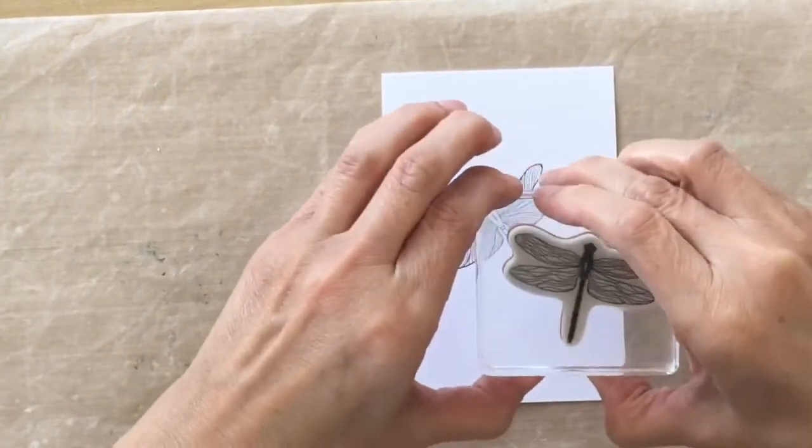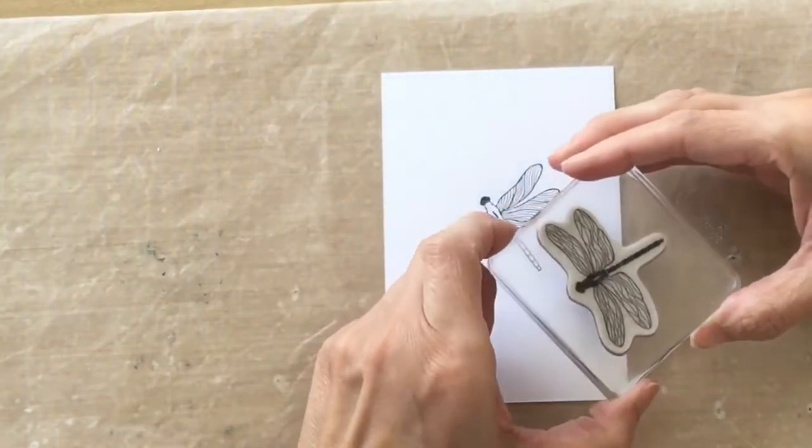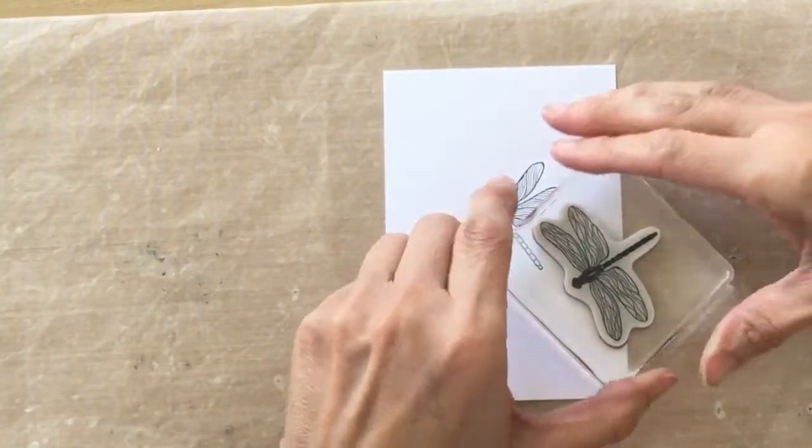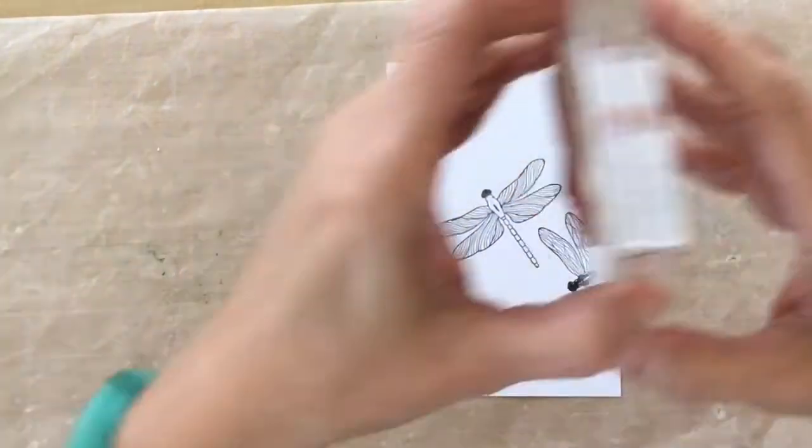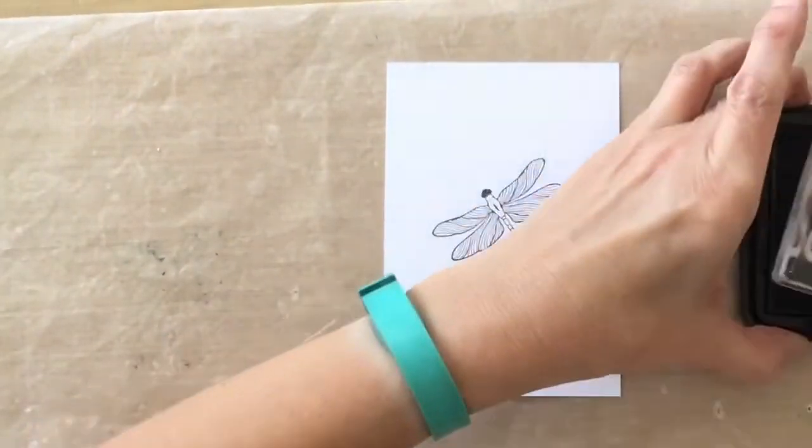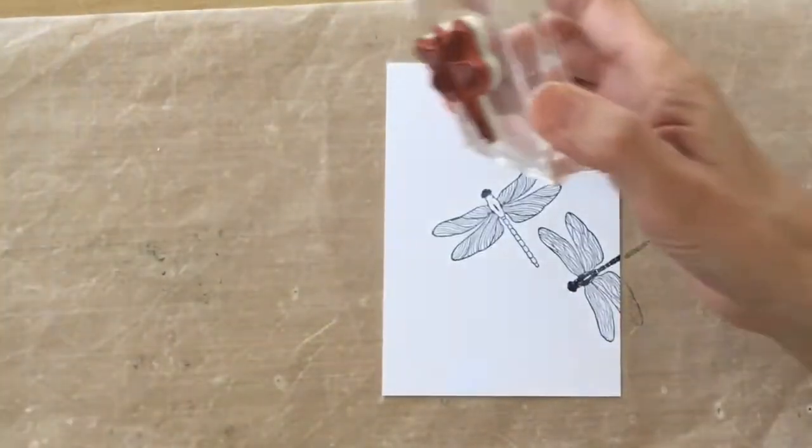I'm going to ink up the next one and I'm going to put that coming off the page, coming onto the page. And then I'm going to ink again. You can see a pattern coming here. I'm going to cover the whole of my paper in dragonflies.